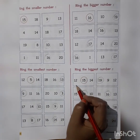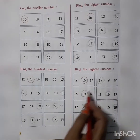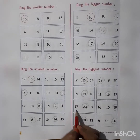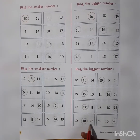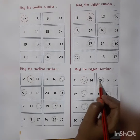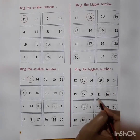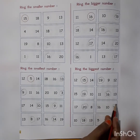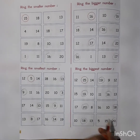Ring the biggest number. Like the smallest number activity, we have to ring the biggest number by comparing three numbers. 15, 19, 10 — biggest is 19. 17, 20, 8 — 20 is biggest. 10, 18, 13 — 18 is biggest. 19, 9, 12 — 19 is biggest. 16, 11, 13 — 16 is biggest. 16, 10, 18 — 18 is biggest. 5, 15, 20 — 20 is biggest.